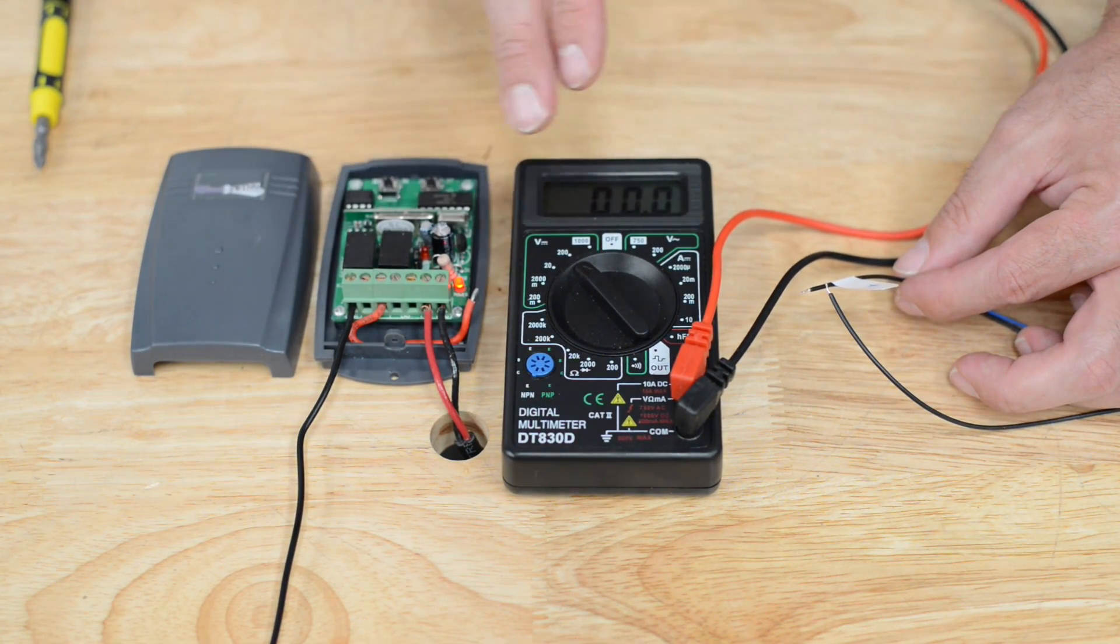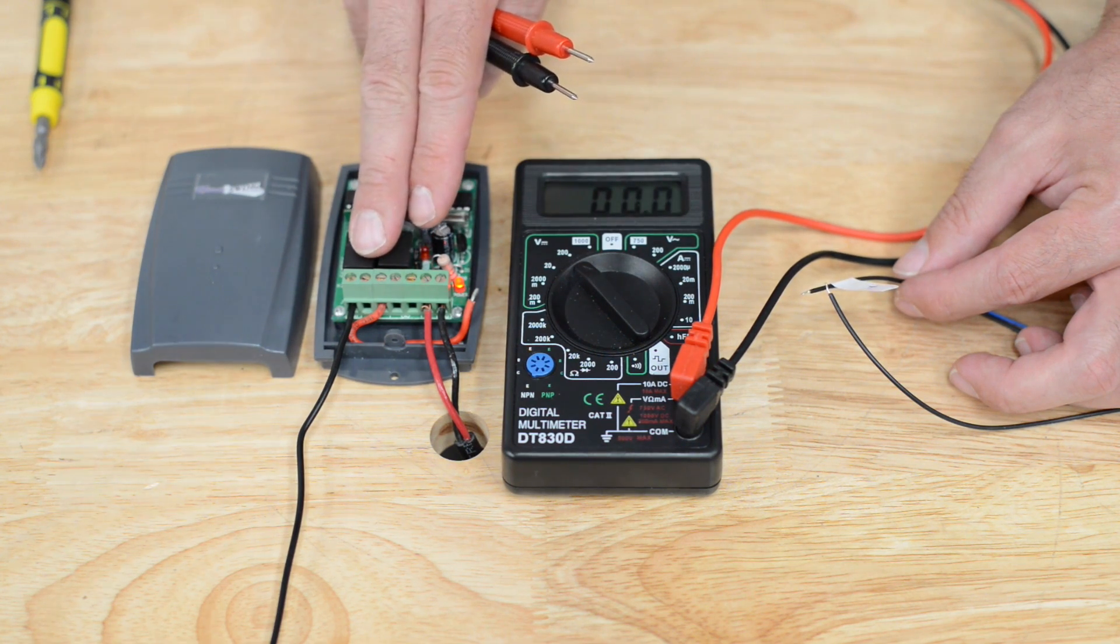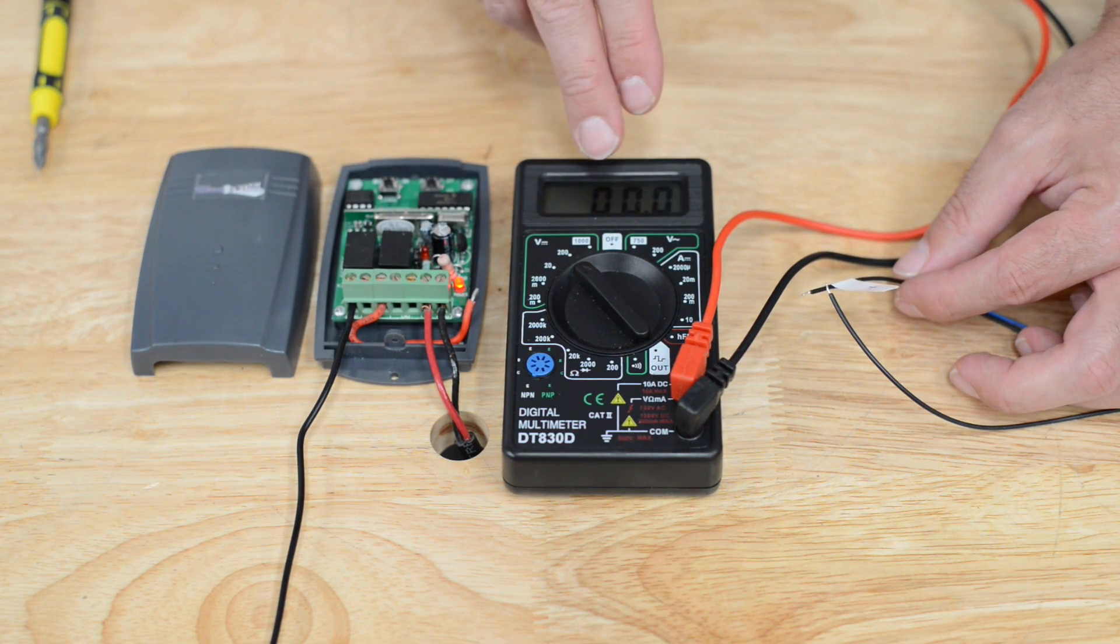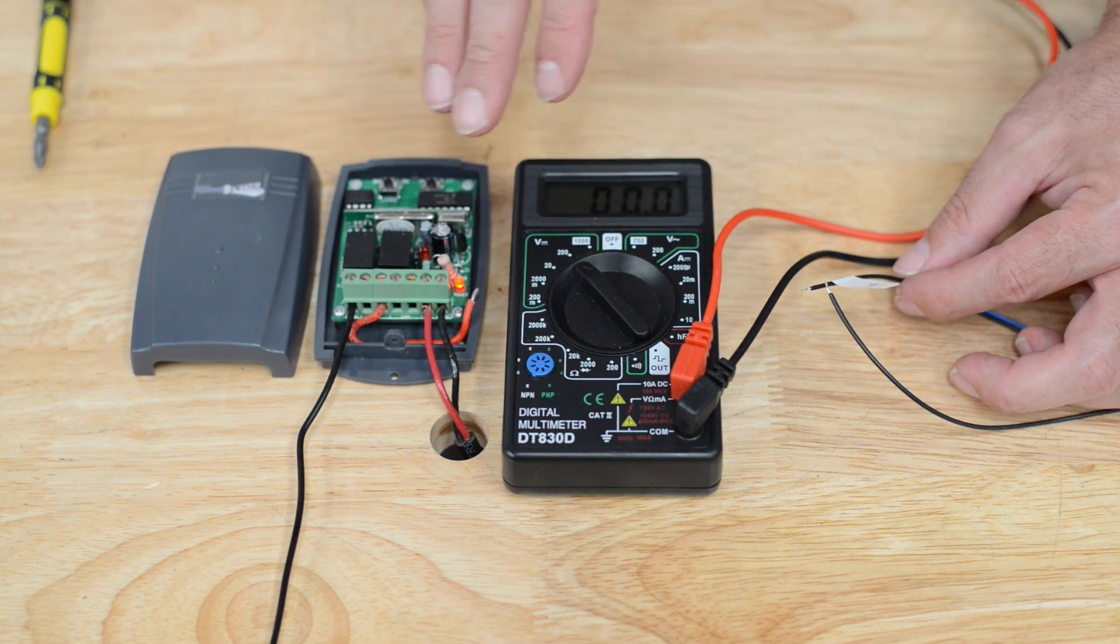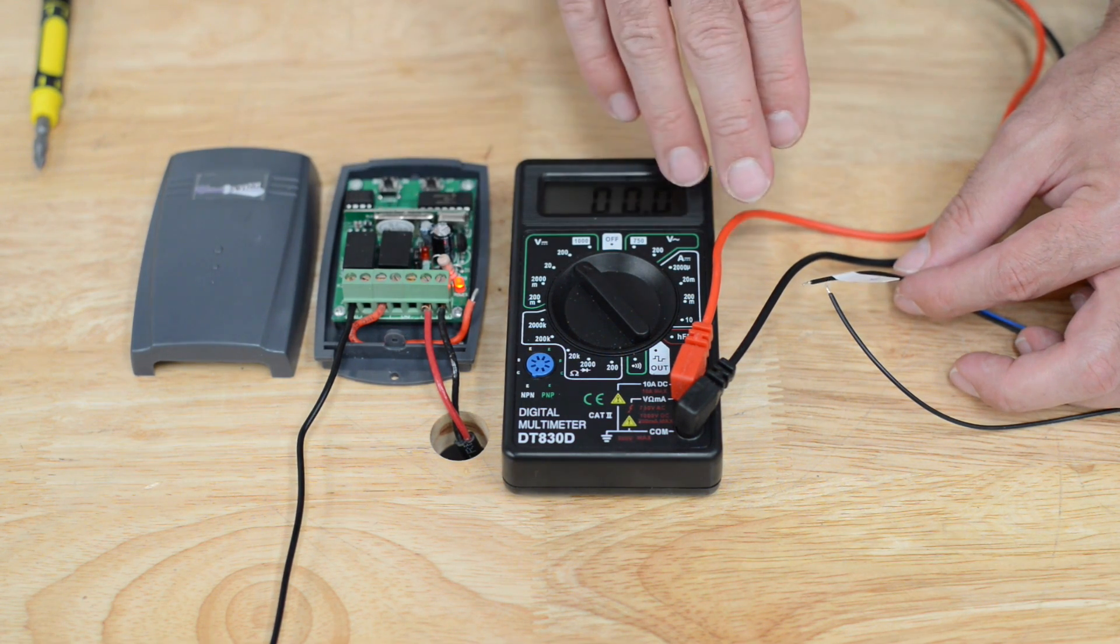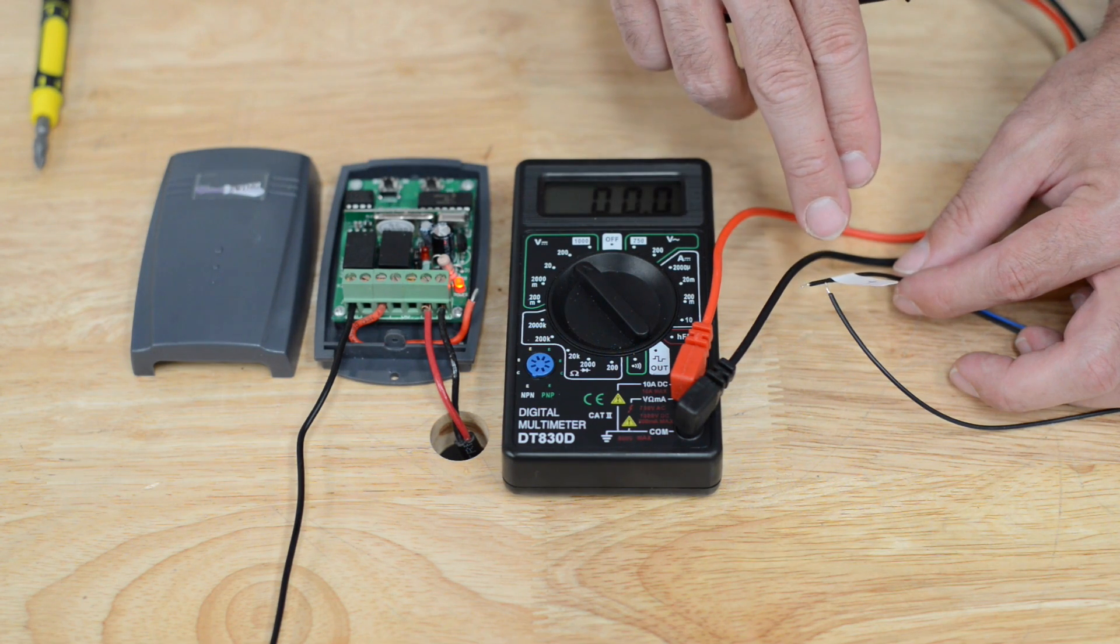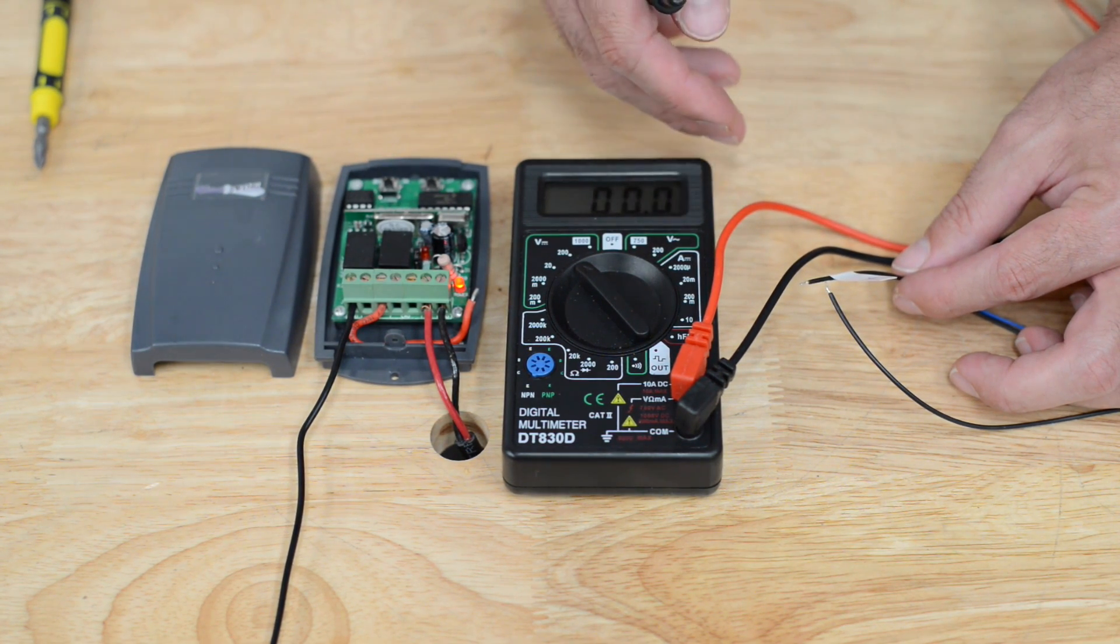If you know that the transmitter module is learned to the receiver and you know the keypad is programmed and the code is being entered and it should be transmitting a signal and no signal is being sent to the receiver, then you can assume that you have those wires backwards. You can reverse them and then try it and it should work.